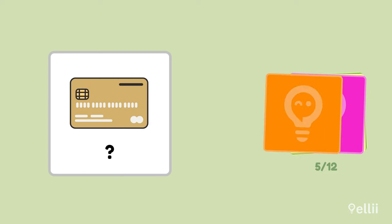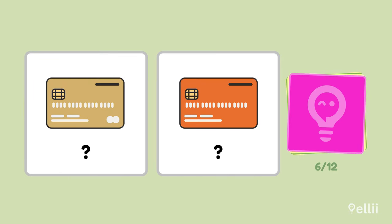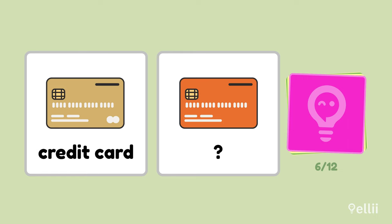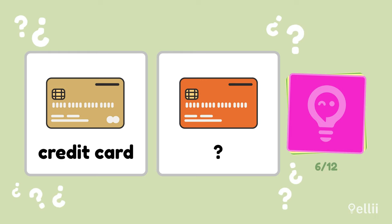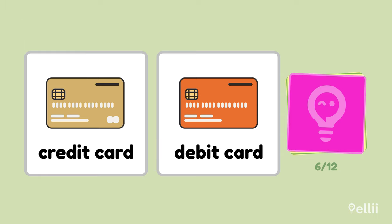These next two images represent very common payment methods. Which one is more commonly used when making an online purchase? The credit card. You can use a credit card to pay for a purchase at a later date. So which card do you need to access an ATM? Debit card. You can also use your debit card to pay for your purchase immediately.